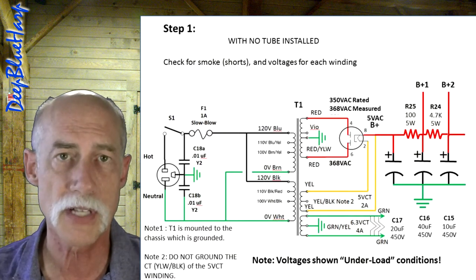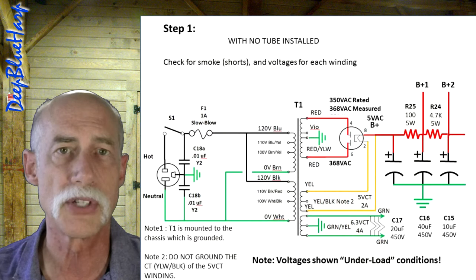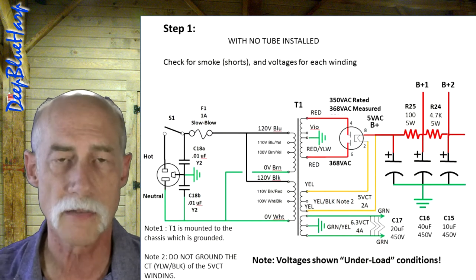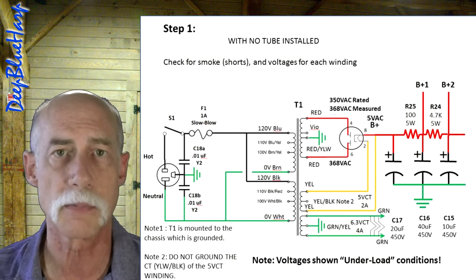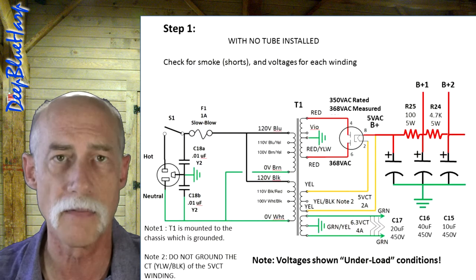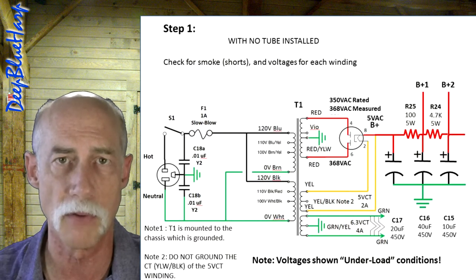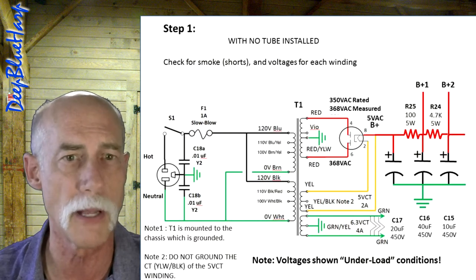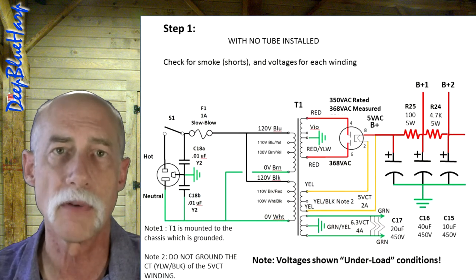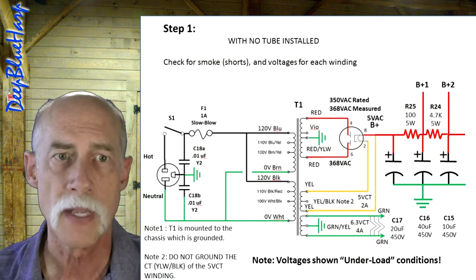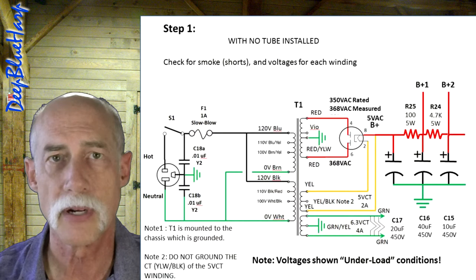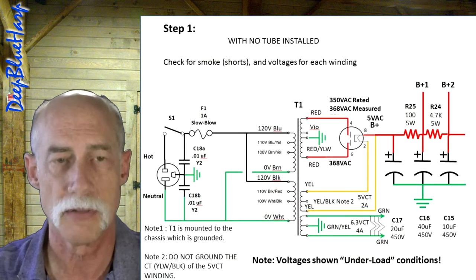This first test phase treats all the voltage under no load. We test the filament winding. Make sure we're getting 6.3 volts there. We test the 5-volt winding. Make sure that we're getting 5 volts there. It'll float up just a little bit and there should be 350 volts on the high voltage winding. In our case, it measured 368. Bonus for us.